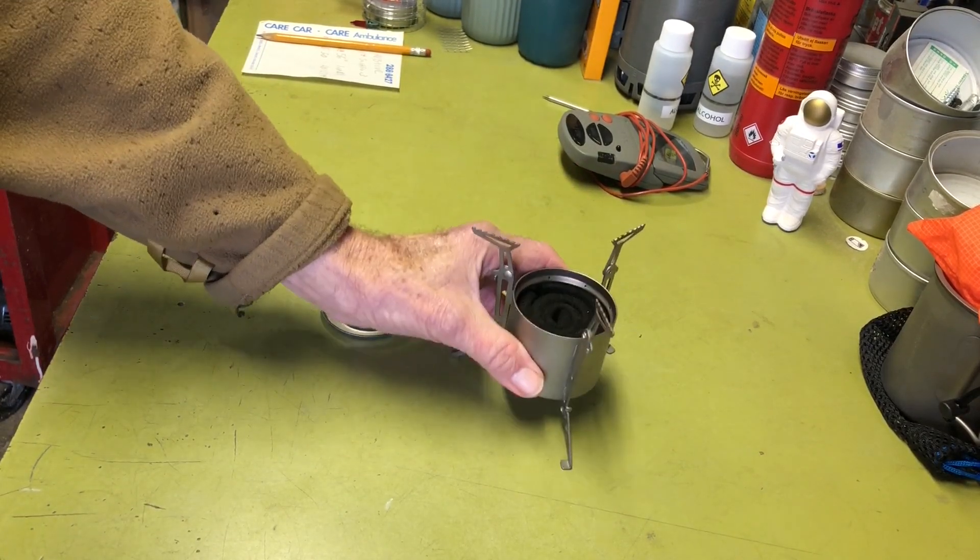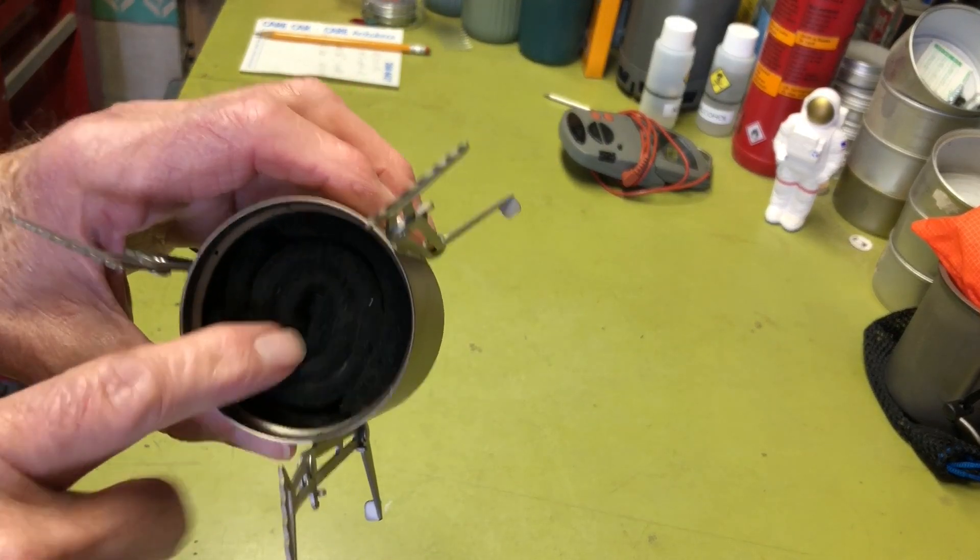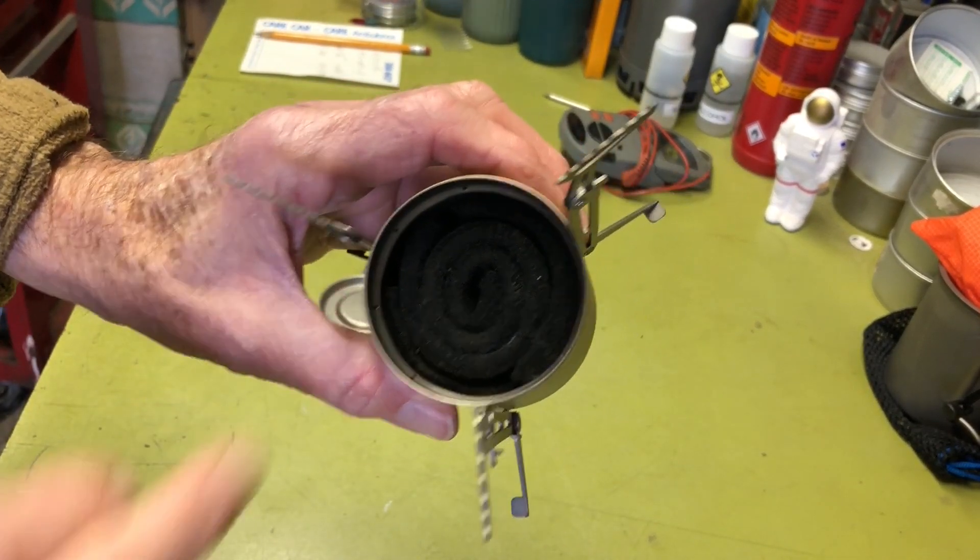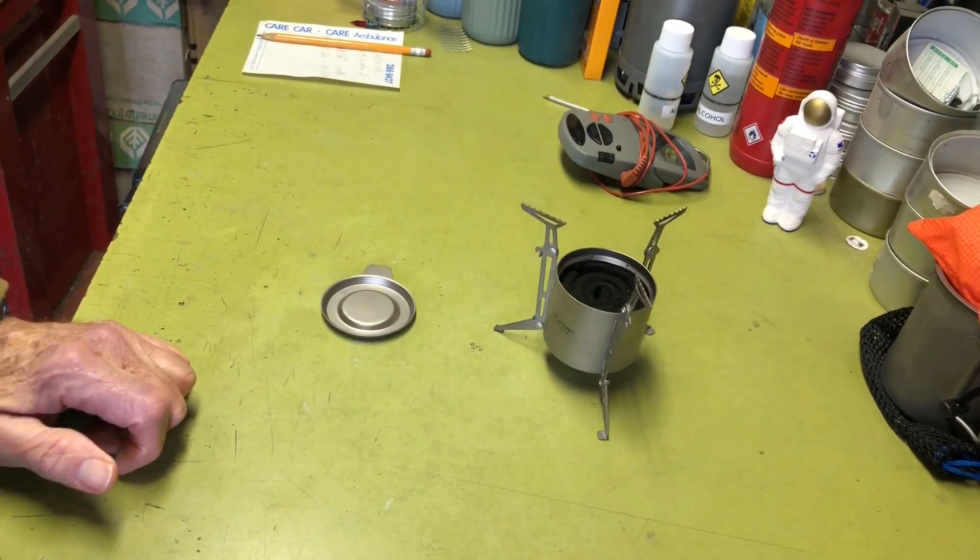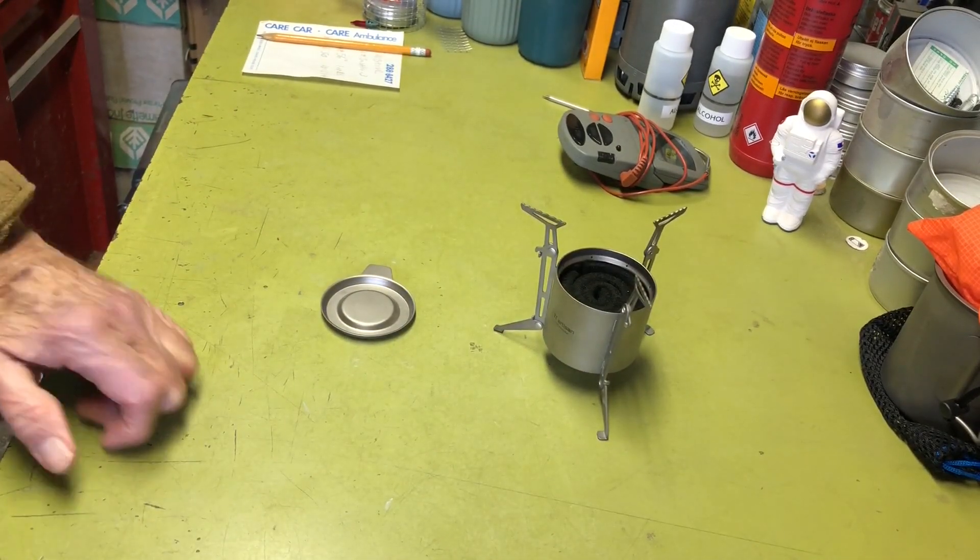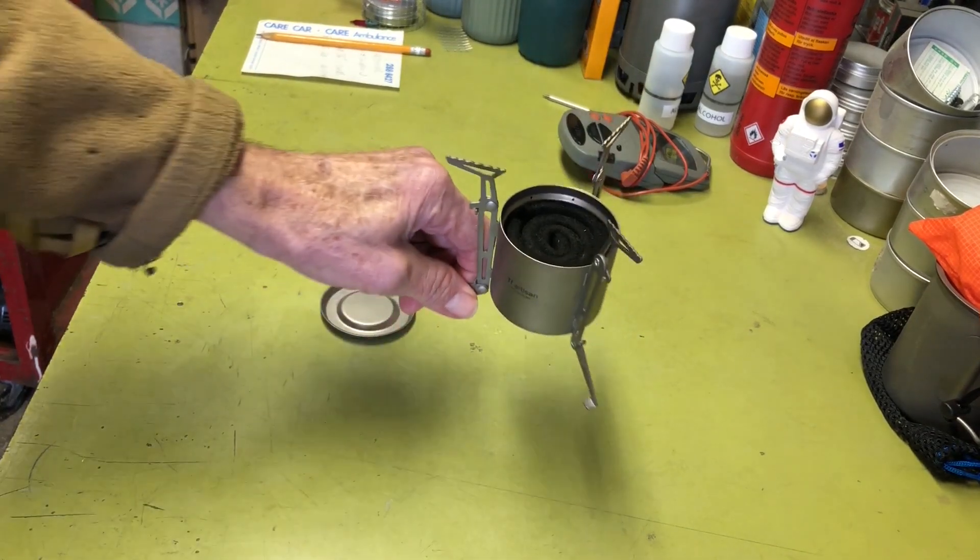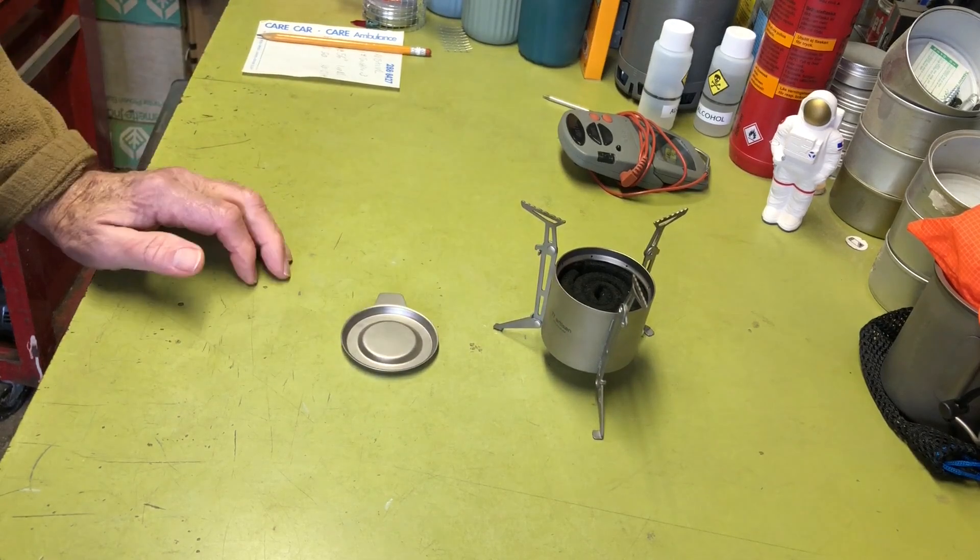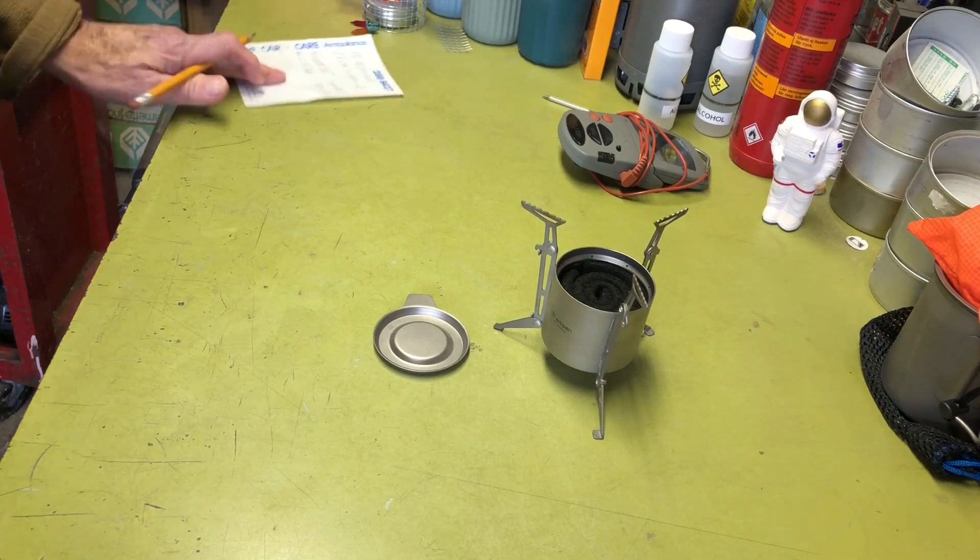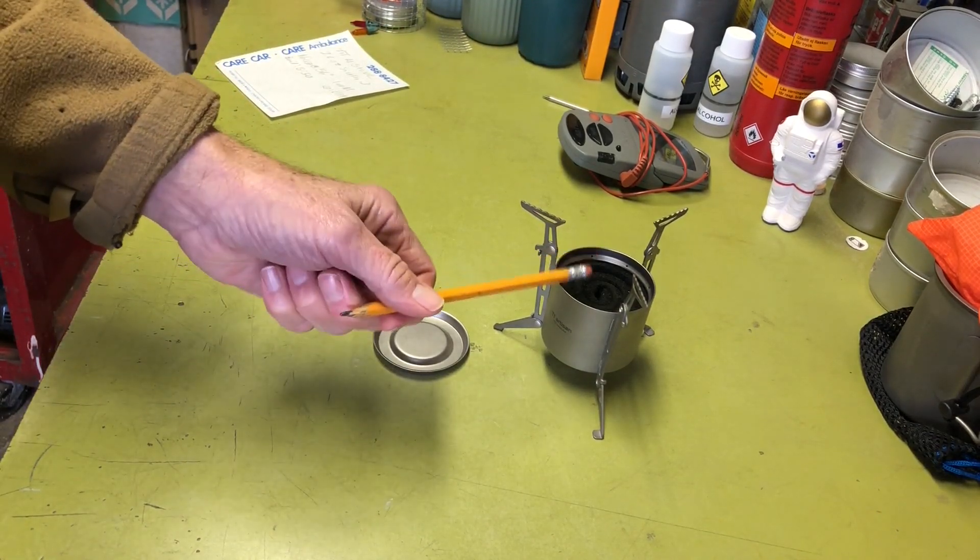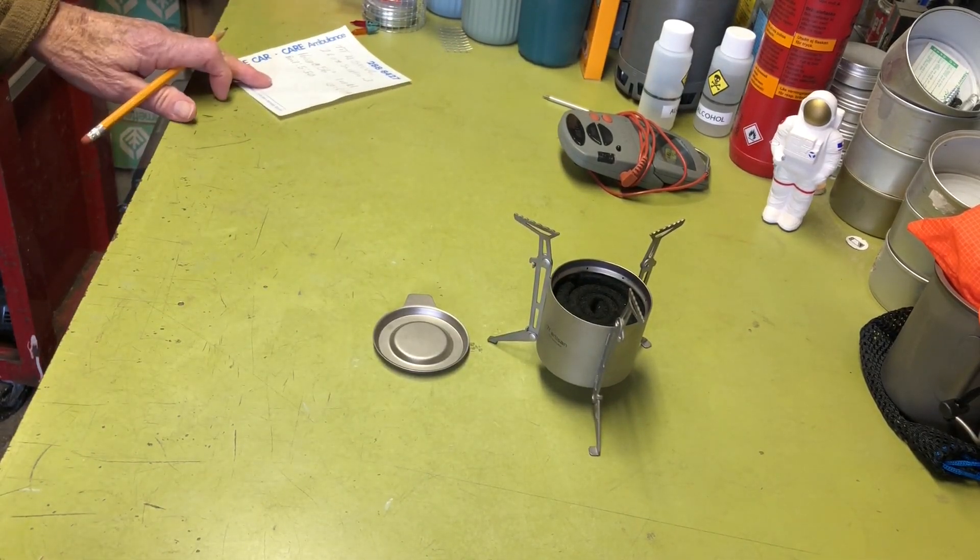I had another commenter asking what the performance would be like if you put carbon felt in the burner cup. So I thought, let's give it a try. I'm going to go ahead and set up for a boil test with this. When I reviewed this stove initially, I did a boil test on it. I'll have a link to that video in the description box. I'm not going to replicate the burner without the carbon felt. If you want to see that burn, it'll be in that video.